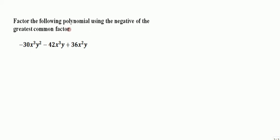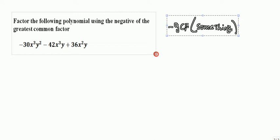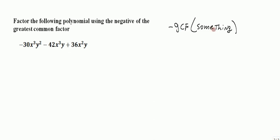Alright gang, this one says factor the following polynomial using the negative of the greatest common factor. Now remember when we factor out the GCF the result is going to look like this. It's going to be the GCF times something.